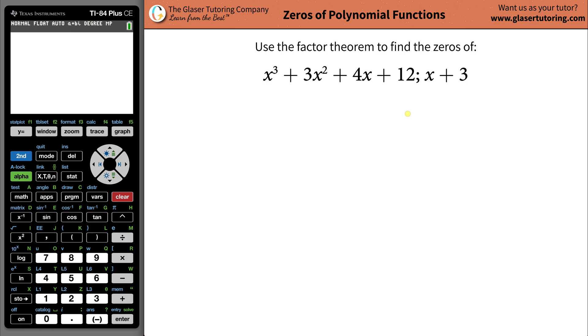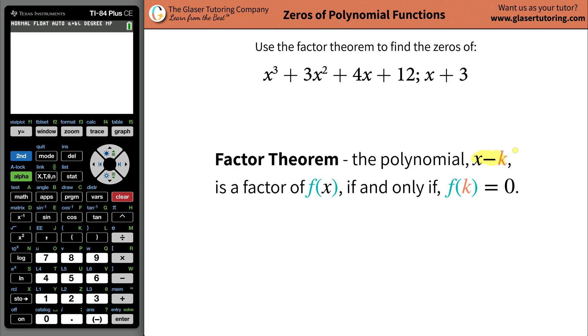So first, what is the factor theorem? Well, here it is. The factor theorem states that the polynomial x minus k, which is basically represented as this in the problem, is a factor of a function f(x), which is represented as this, if and only if f(k) is equal to zero.